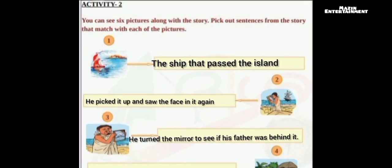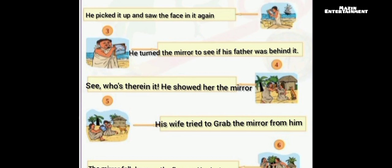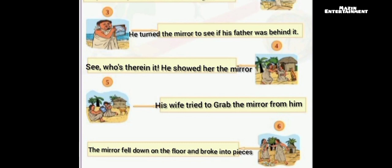Activity 2. You can see six pictures along with the story. Pick out sentences from the story that match with each of the pictures. The ship that passed the island. He picked it up and saw the face in it again. He turned the mirror to see if his father was behind it. See who's there in it. He showed her the mirror. His wife tried to grab the mirror from him. The mirror fell down on the floor and broke into pieces.